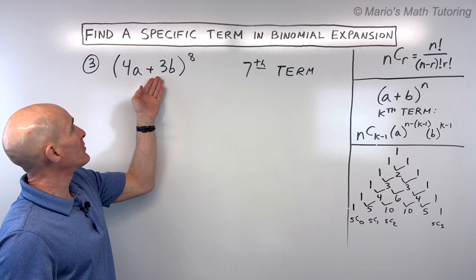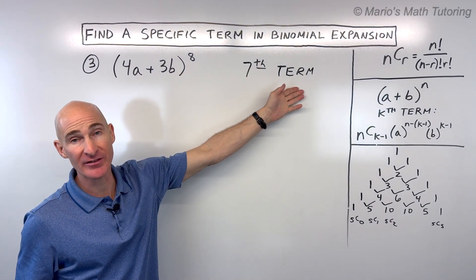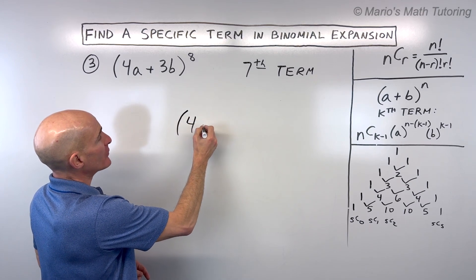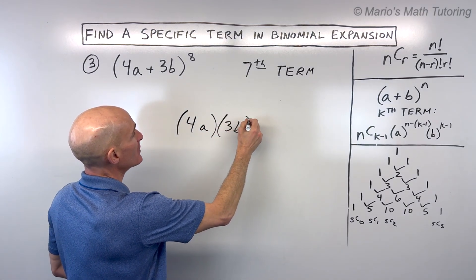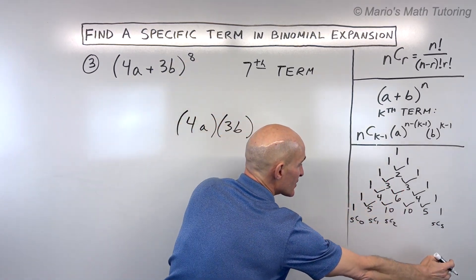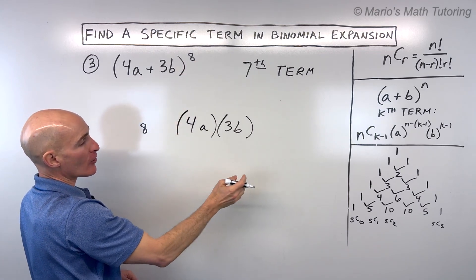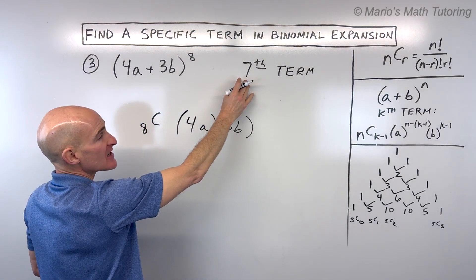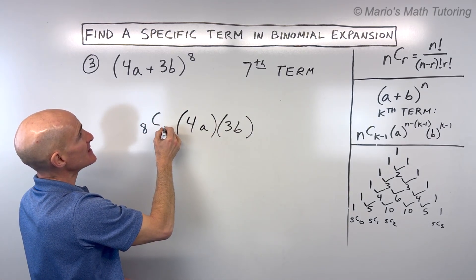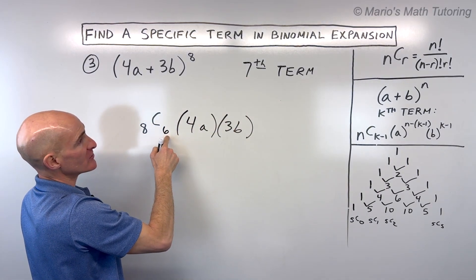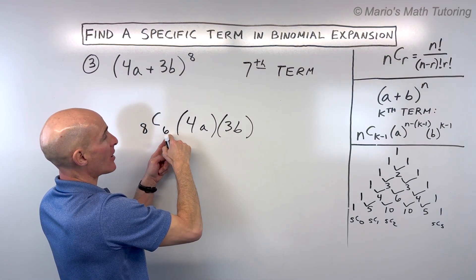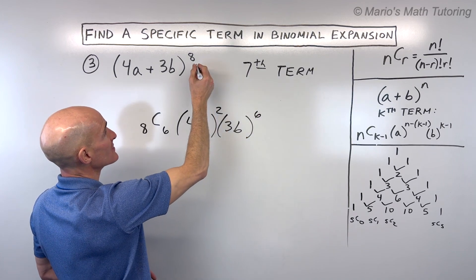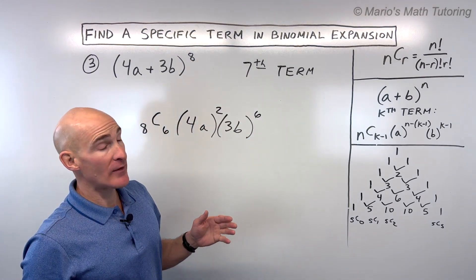Example three: (4a + 3b) to the eighth power — find the seventh term. Write the two terms: 4a and 3b. We're on the eighth row. For the seventh term, one less means 8C6. The second term's exponent and r value match at 6, and the two exponents must add to 8: 2 plus 6 equals 8. So we have 8C6 times 4a squared times 3b to the sixth.